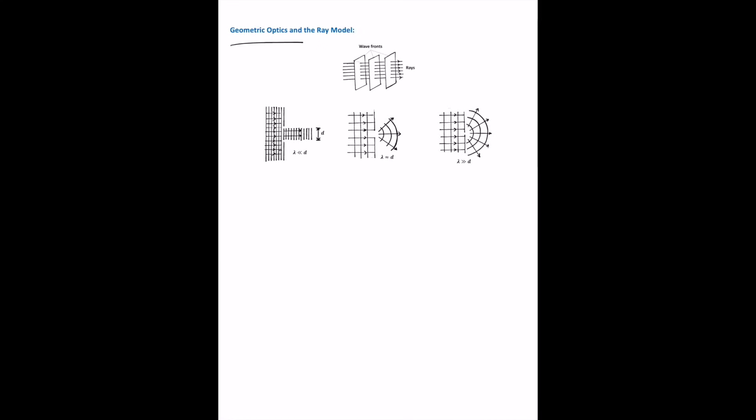Geometric optics shows the behavior of visible light at the interface between two media, and such behavior can be applied to all electromagnetic radiation using a simplification model known as the ray model. In this model, a ray of light is a straight line along the direction of propagation of the wave. A set of light waves are represented by straight arrows, and these are the wave fronts. For a plane wave, the wave front is perpendicular to the direction of propagation, which is the direction of the ray.